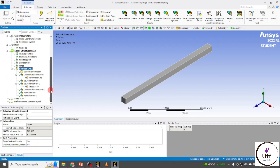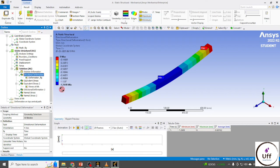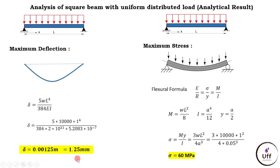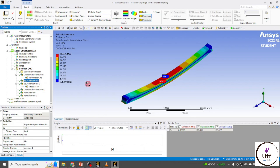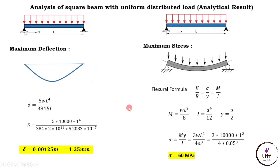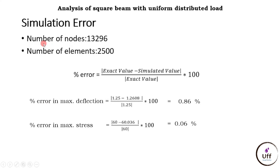With the refined mesh, the deformation is minus 1.2608 mm and the stress is 60.036 MPa. Using these results: with 13,296 nodes and 2500 elements, the percentage error in maximum deflection is 0.86% and the percentage error in maximum stress is 0.06%. These are very small errors, confirming we are getting approximately accurate results from the simulation.